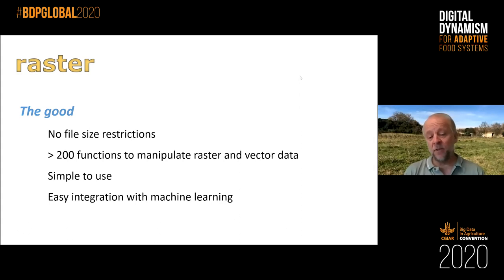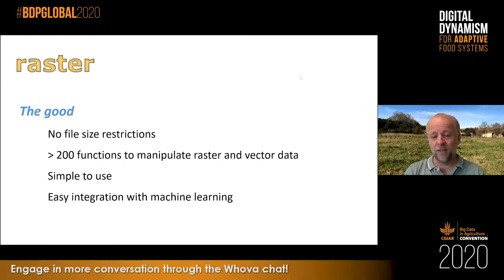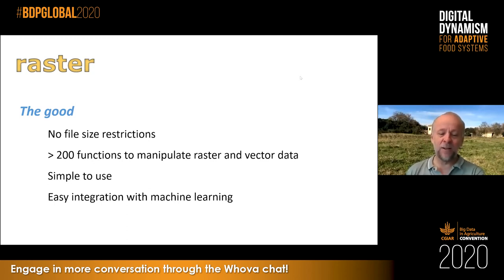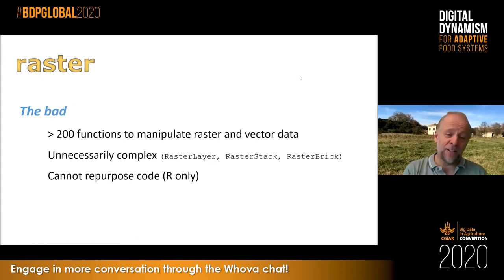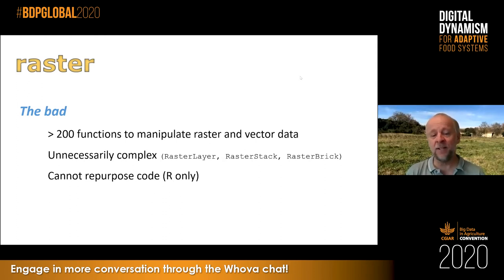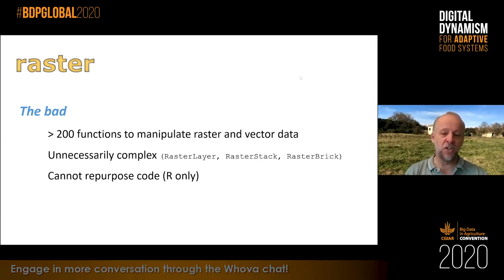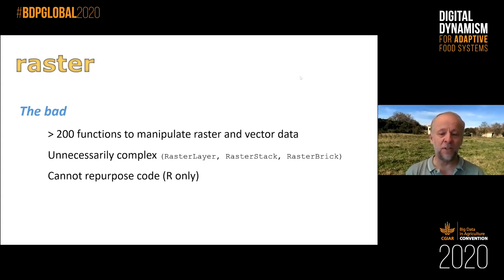The real motivation for me to start raster at that time was to integrate spatial data and machine learning — to get out of the silos where you had to do GIS separately and then statistical analysis or machine learning in something like R. I wanted it all integrated. The bad: there are a lot of functions — maybe too many — and some unnecessary complexity crept in largely because of path dependency. We developed it, extended it, and added more things. Before you know it, there's complexity that could be reduced, but now there are about 300 other R packages that depend on raster, so I cannot change things without breaking software downstream.